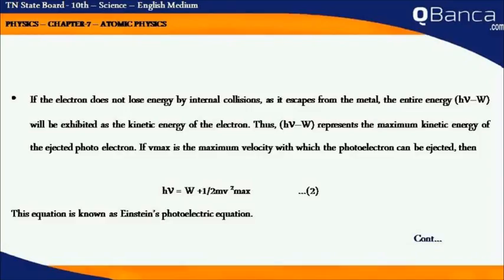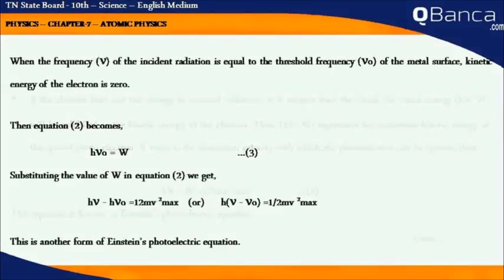If V_max is the maximum velocity with which the photoelectron can be ejected, then hν = W + ½mv²_max. This equation is known as Einstein's photoelectric equation.